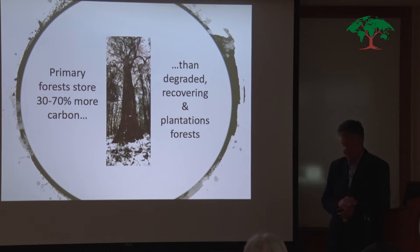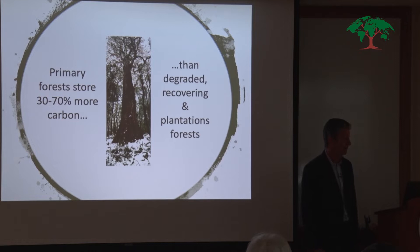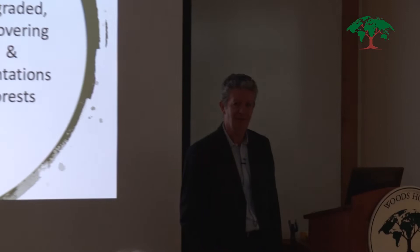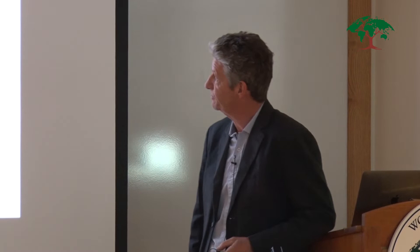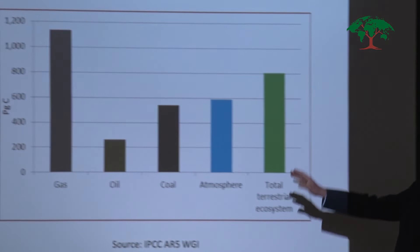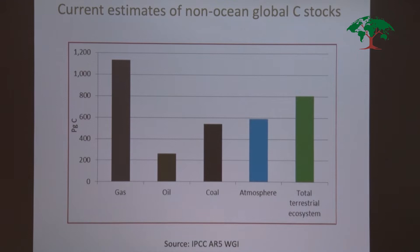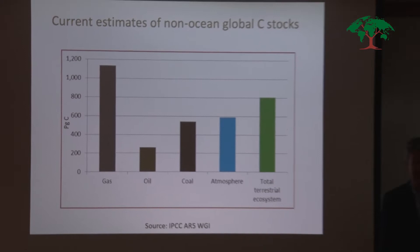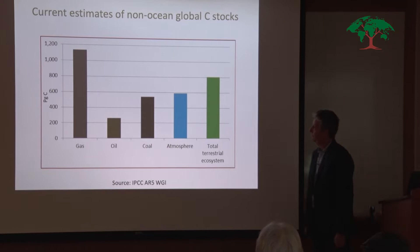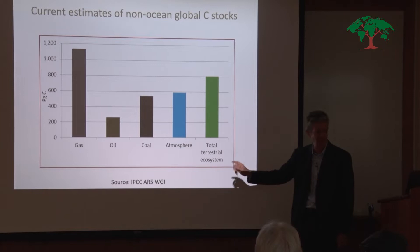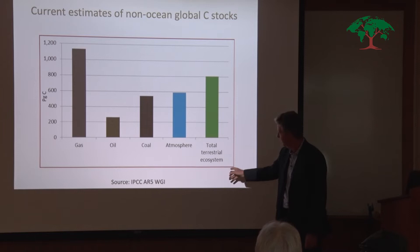Why is that important? This is my only graph. The vertical axis shows the stock of carbon in major reservoirs in the Earth system, measured in petagrams — one petagram of carbon equals one billion metric tons. We're looking at how much carbon is in known conventional gas deposits, known oil deposits, known coal deposits, in the atmosphere, and in terrestrial ecosystems — 80% of which is in forests.